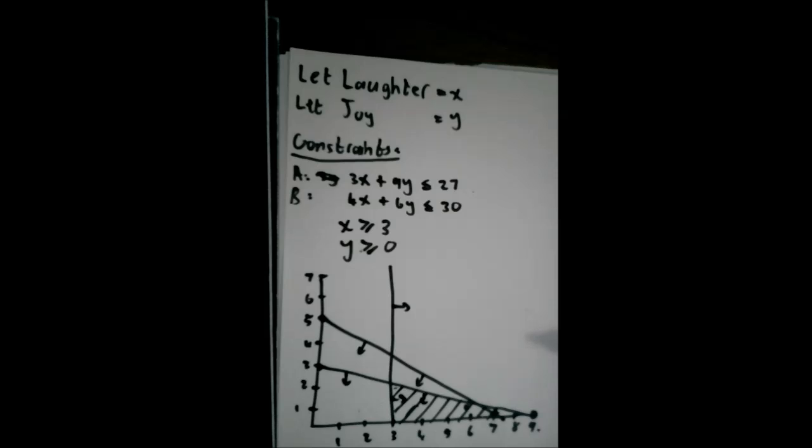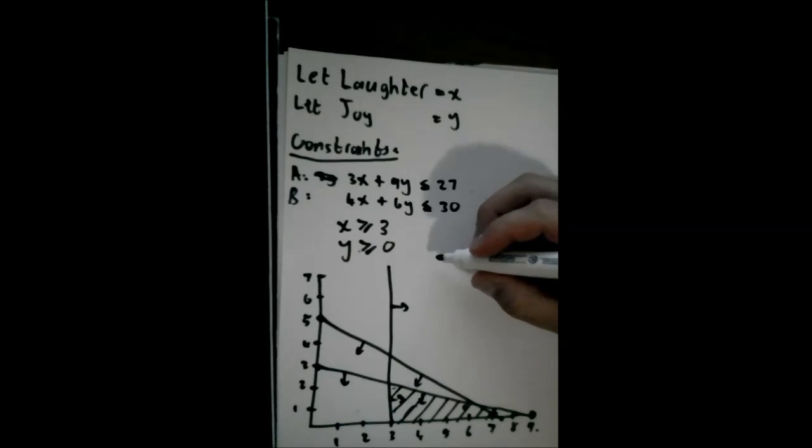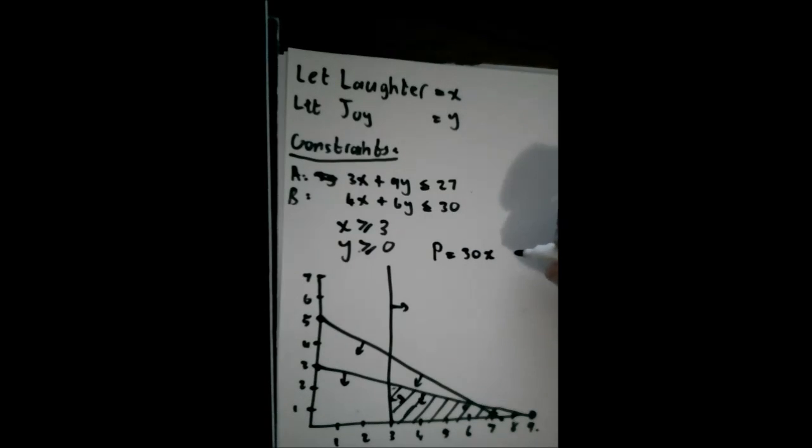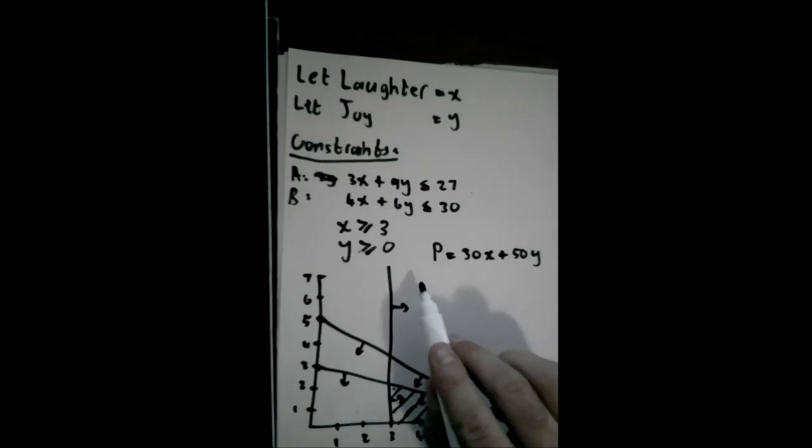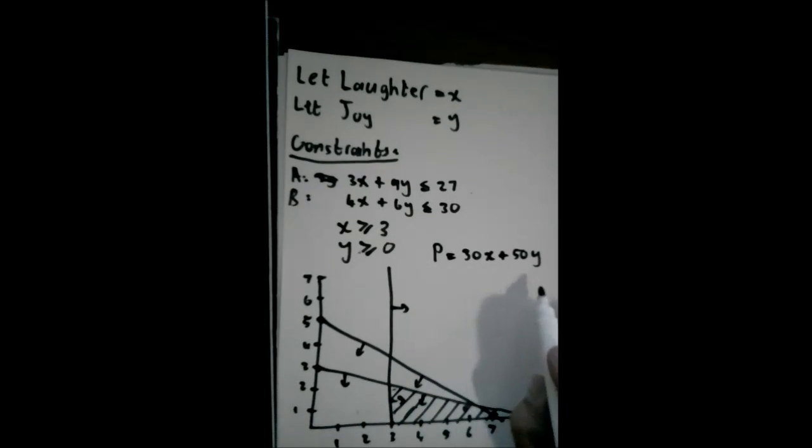And now the optimal solution, which in this case would be profit. Let's make up a profit function. Let's say that the profit that the company makes is equal to 30 Rand for each liter of laughter it sells plus 50 Rand for each liter of joy it sells. So that is now what we call our objective function or our optimal function.